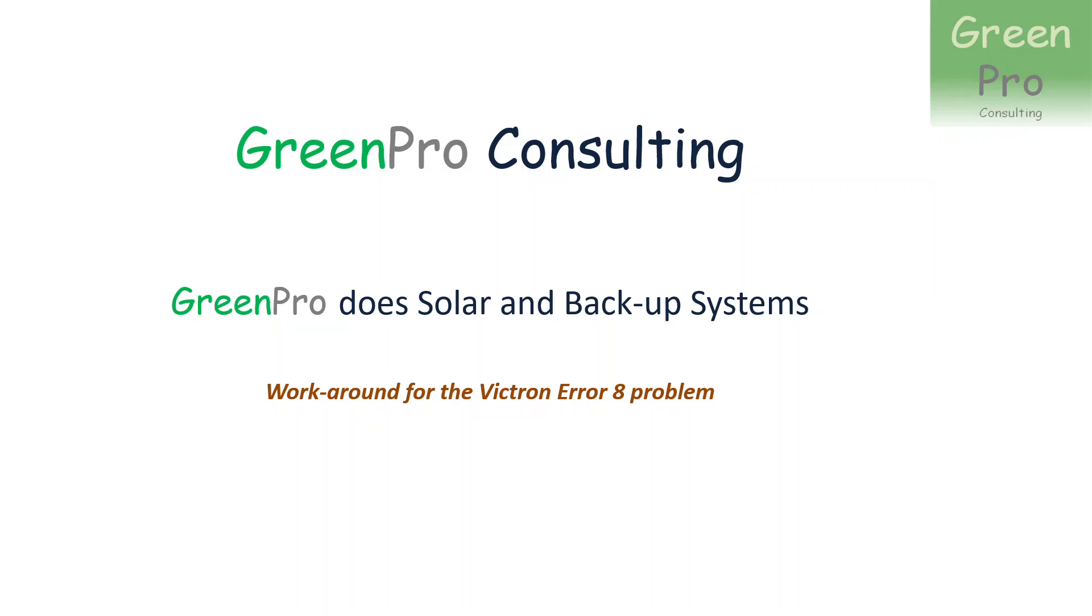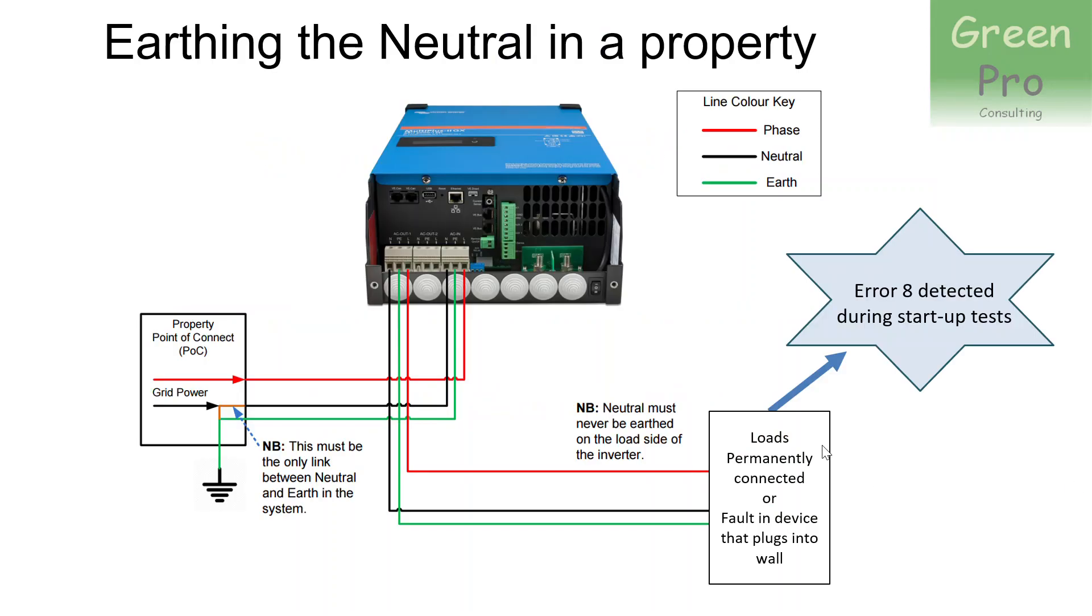The problem is in some device that someone plugged into the house long after the Victron system was commissioned. And then at the next startup, because this test only happens during startup, the Victron sees a problem and then it's chaos. Nobody knows what happened because some new thing or maybe not a new old thing was plugged into the house and now it suddenly has a problem. And you're only noticing it two weeks later because that is the next time that the Victron system boots up. So Victron, I think you really screwed up here, which is sad because that is not something that you normally do.